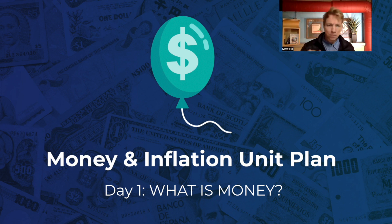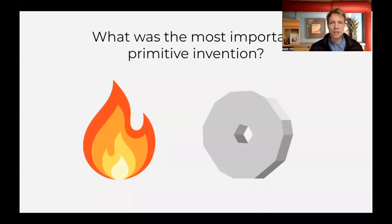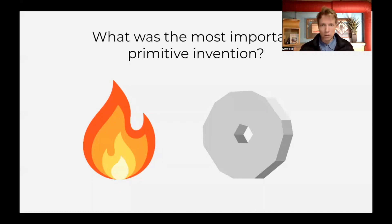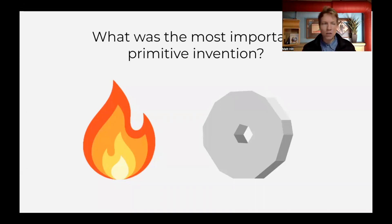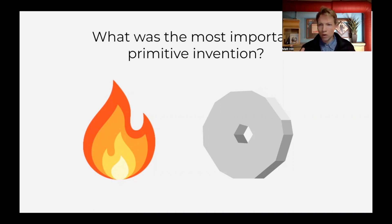This first lesson is really focused on thinking about money and specifically the purpose of money. We motivate this with a bell ringer that asks: what do you think the most important primitive invention is? Go back to early human history — the most important tools or whatever that you might think were invented.